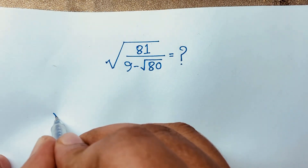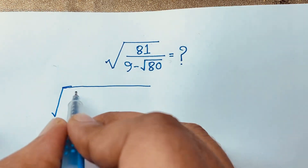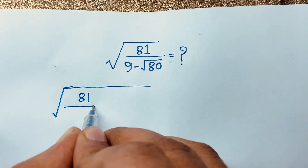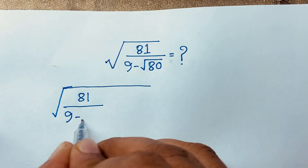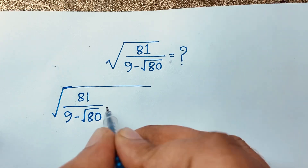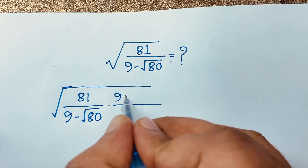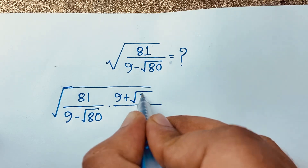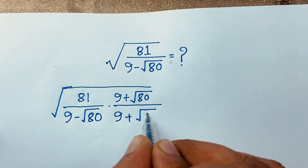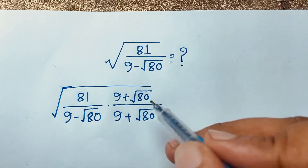We have square root of 81 over 9 minus square root 80. I multiply below by 9 plus square root 80, and here is 9 plus square root 80. At this moment you can see this cancels out.